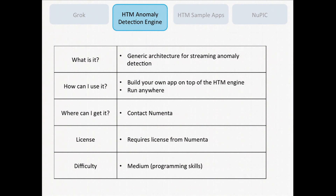The second way is the HTM anomaly detection engine. This is a software component that is a generic architecture for streaming anomaly detection. It's not specific to IT metrics only — you can use it for really any kind of streaming data you want. You can build your own application on top of the HTM engine and run it anywhere. This code does require a license from Numenta, so if anybody is interested, you can contact me or any one of the Numenta folks.